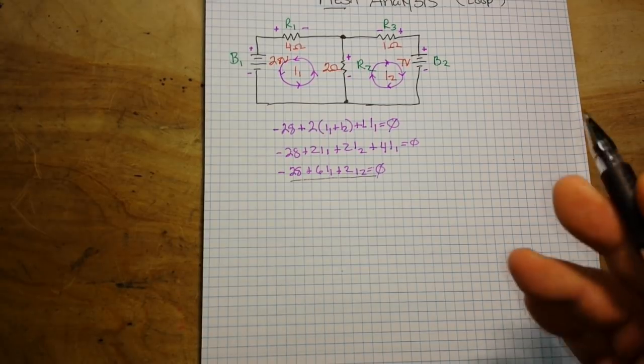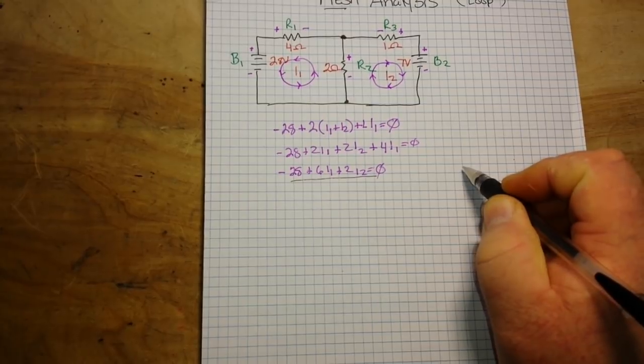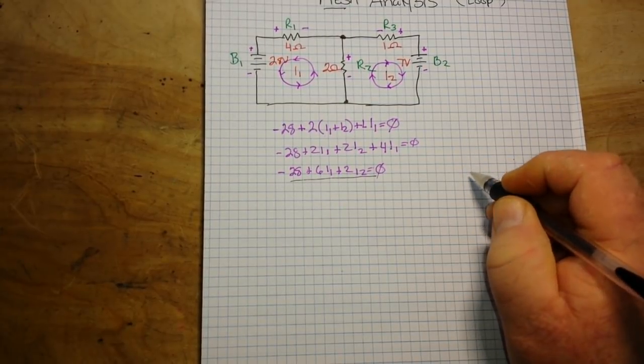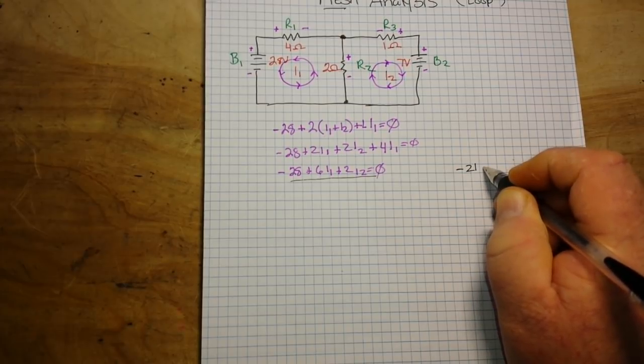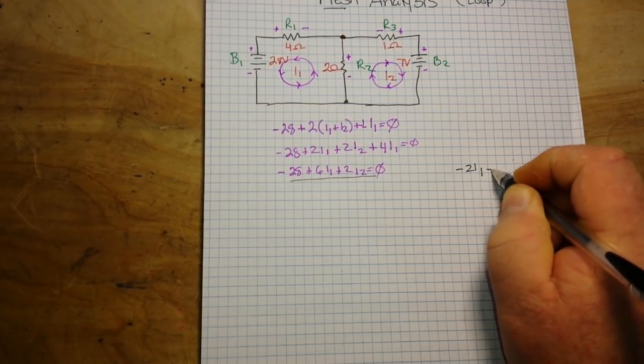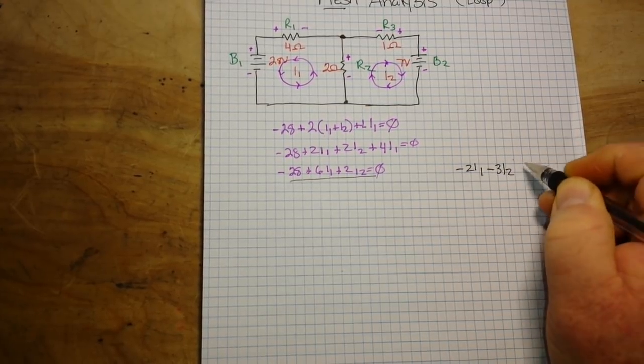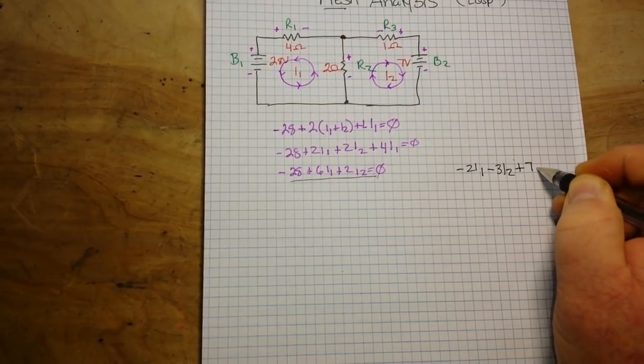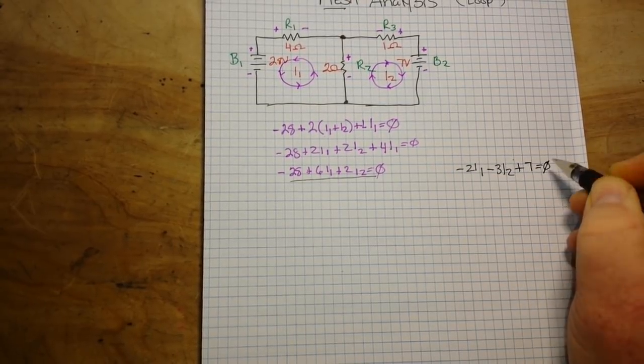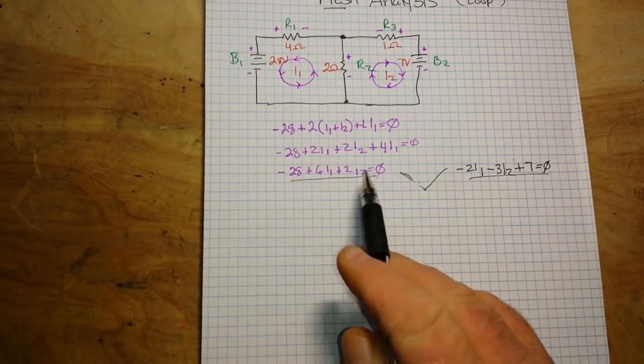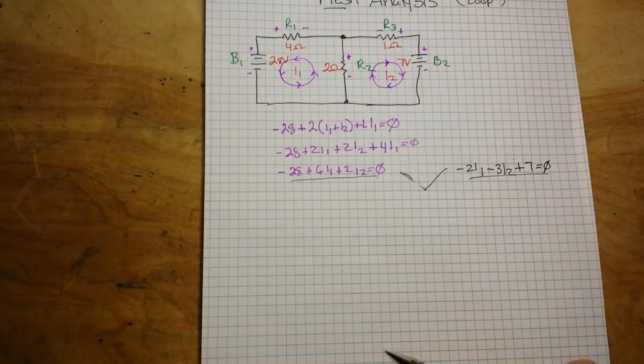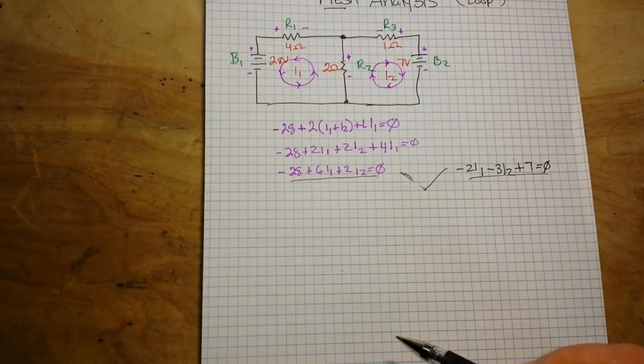And if we do the same equation and simplify it for the right-hand loop we end up with minus 21 minus 3 I2 plus 7 equals 0. So now we have our two equations based on our two current loops, and we can now solve them.